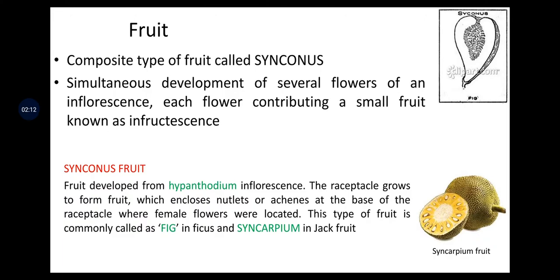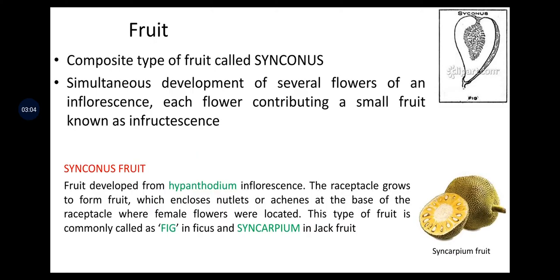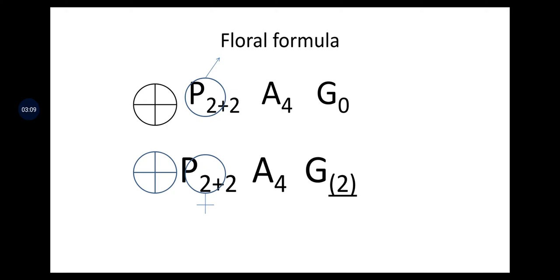Fruits are composite type called syconus, formed by simultaneous development of several flowers of an inflorescence, each flower contributing a small fruit — known as an infructescence. The syconus fruit develops from the hypanthodium inflorescence; the receptacle grows to form the fruit enclosing nutlets or achenes at the base. This fruit is commonly known as fig in Ficus and syncarpium in jackfruit. The floral formula is P(2+2), with androecium of 4 stamens and gynoecium with a superior ovary of two carpels.